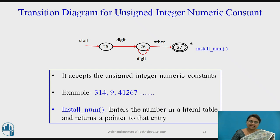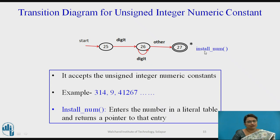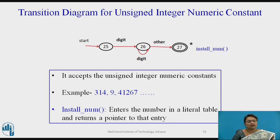Another transition diagram is for unsigned integer numeric constants. It starts with a digit followed by more digits, accepting constants like 349 or 41267. After retracting, it calls install_num, which enters the number into the literal table and returns a pointer to that entry — similar to the symbol table for identifiers.